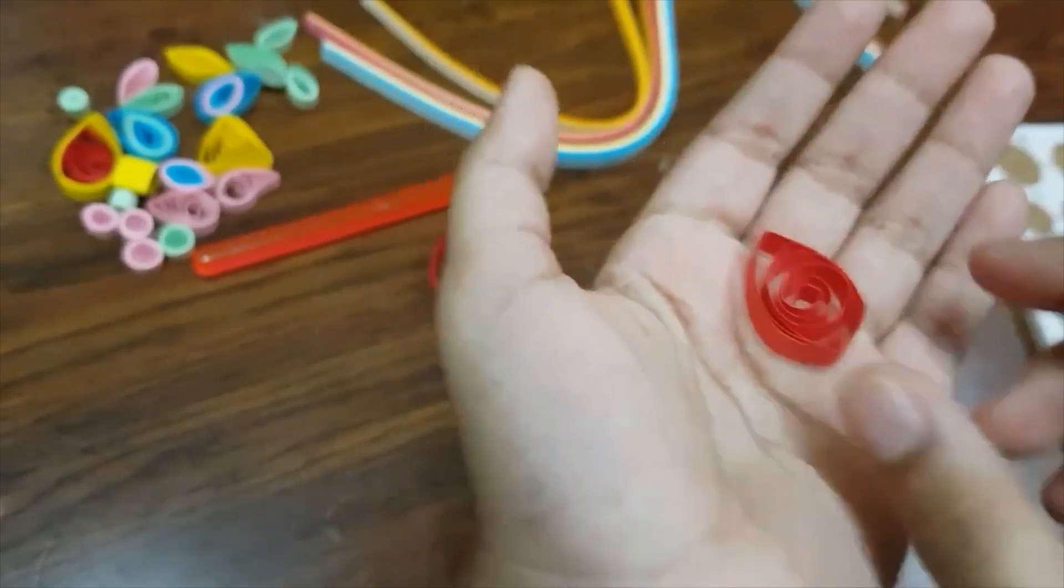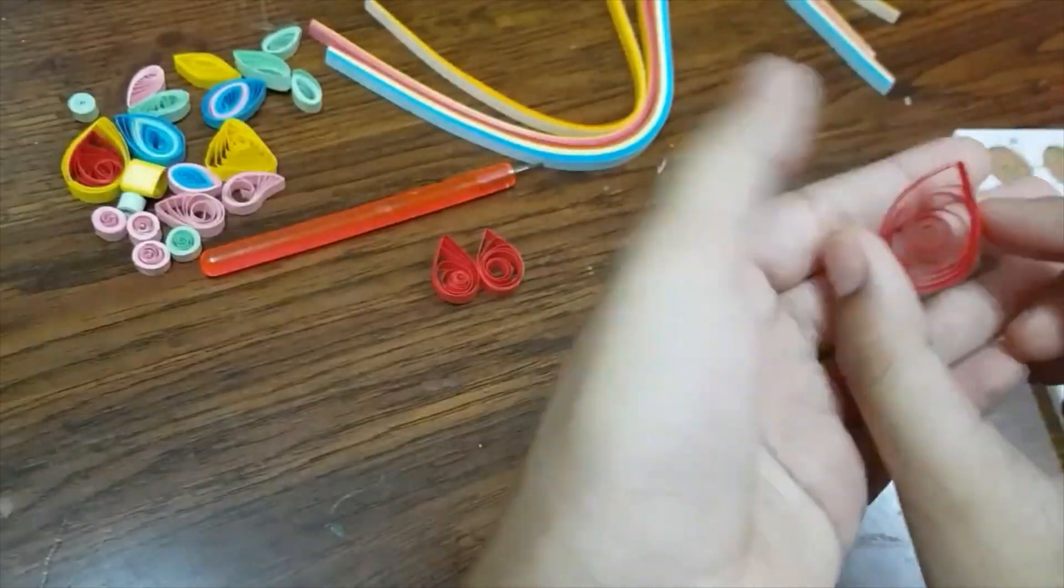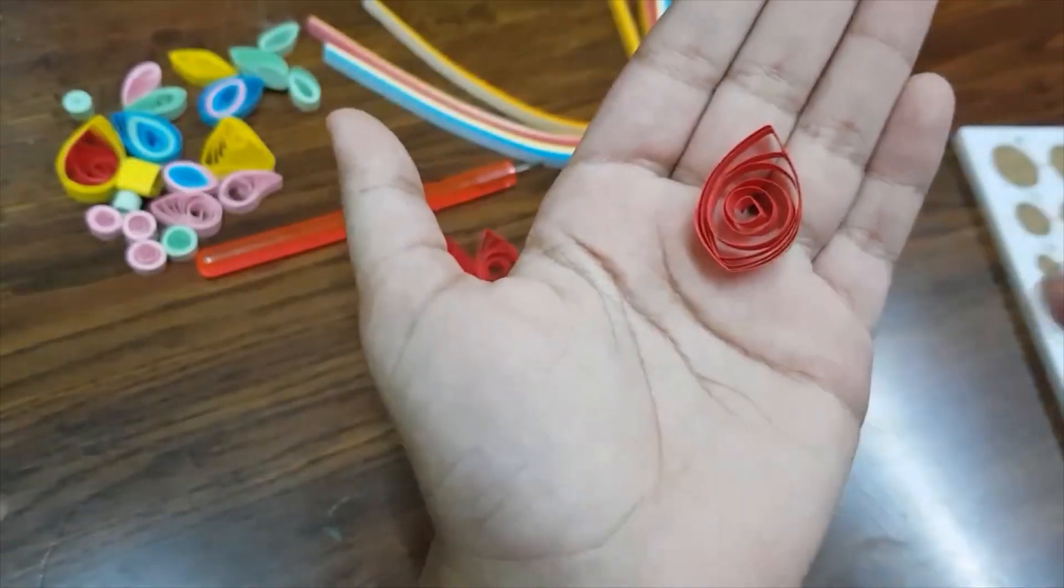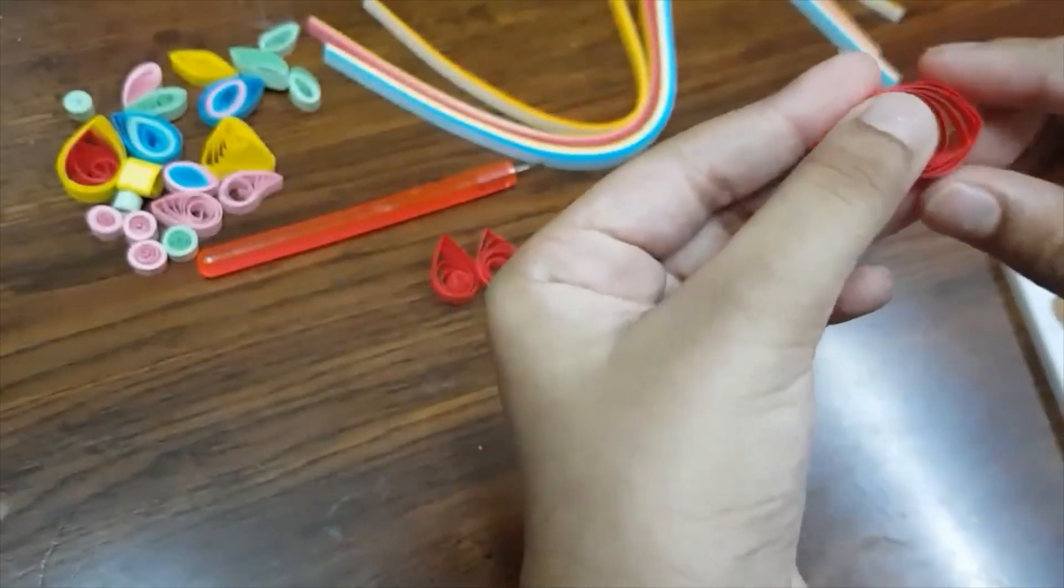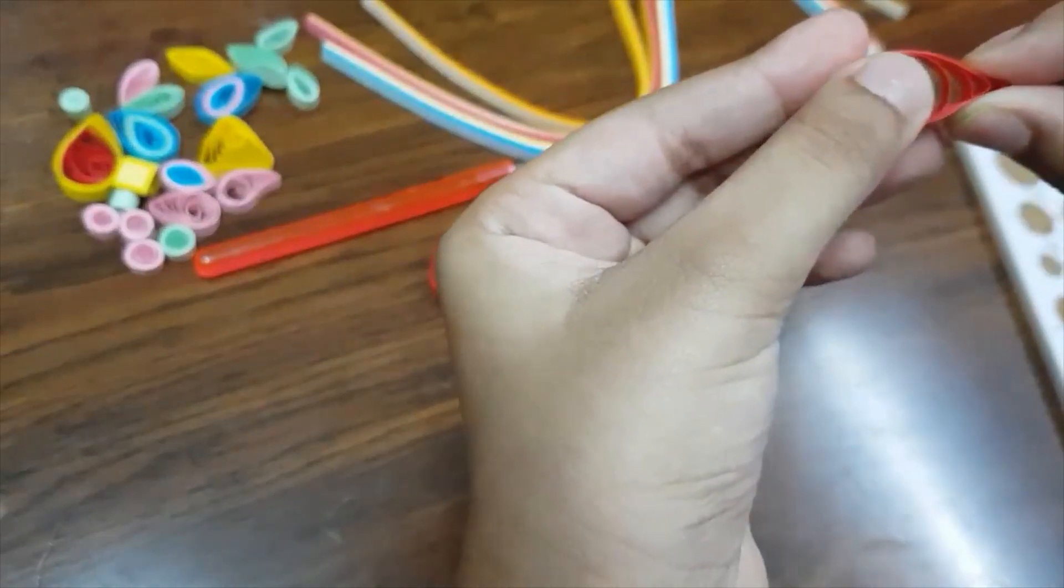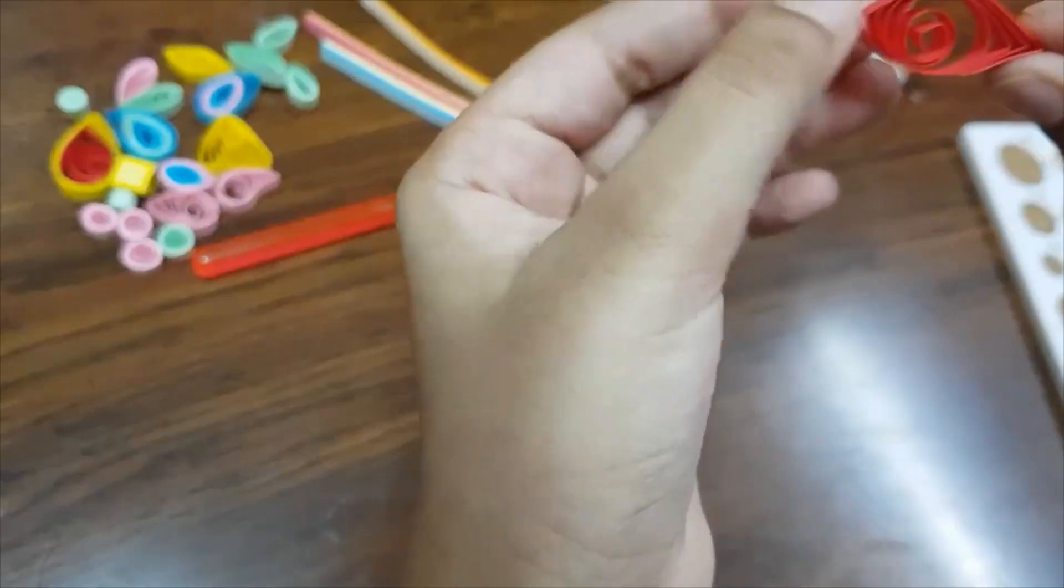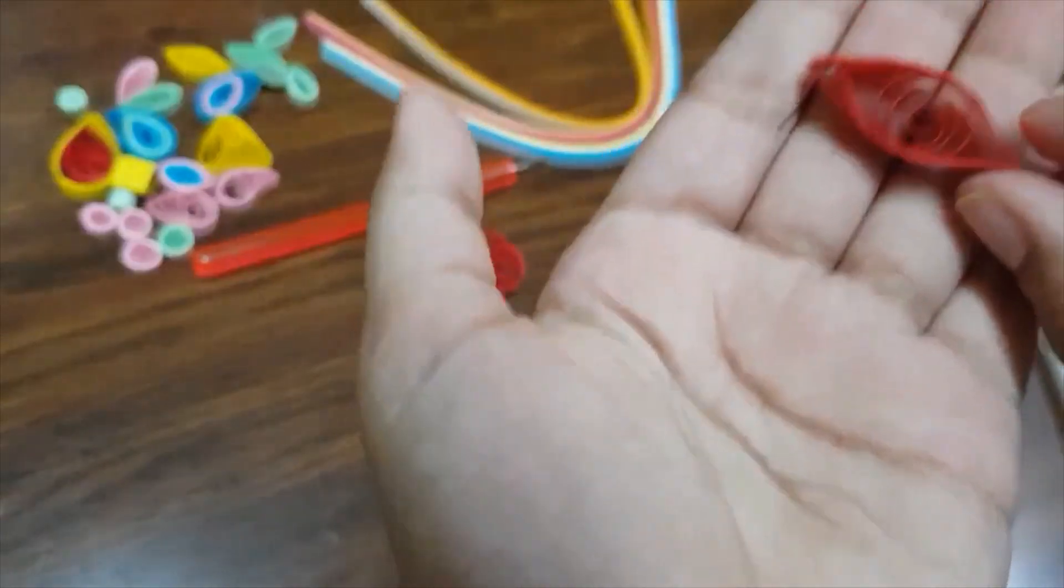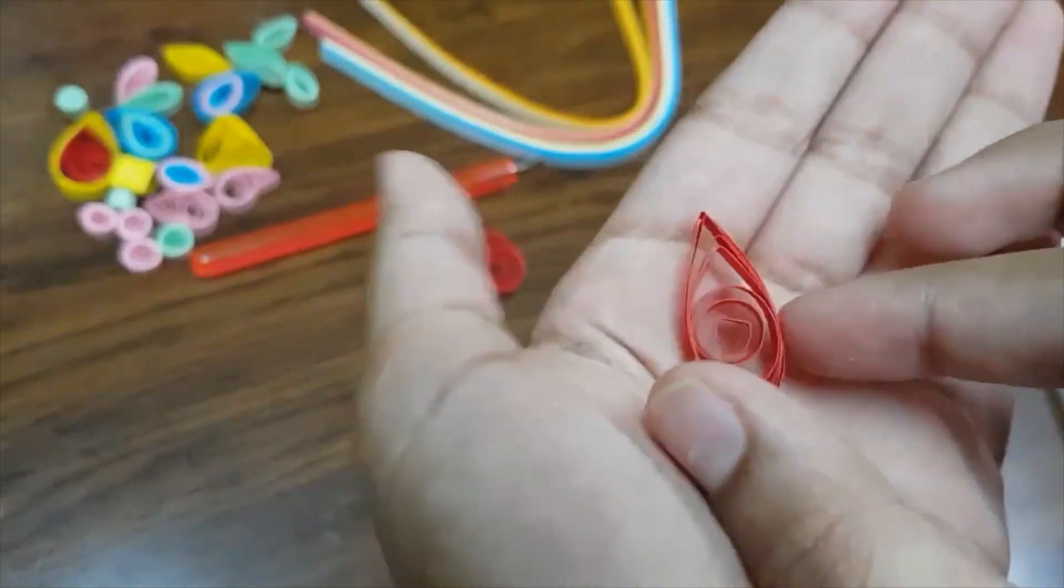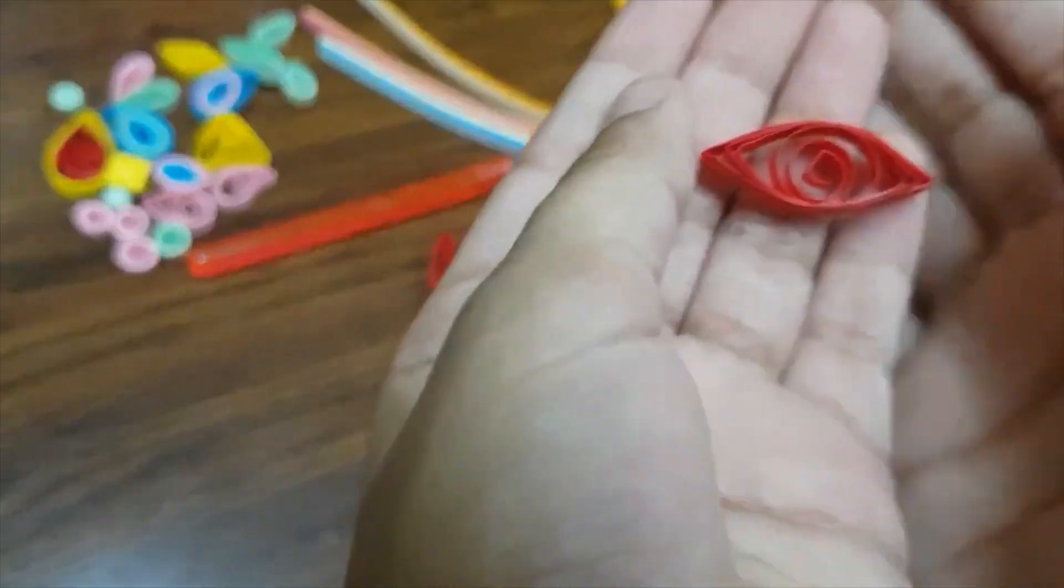So here I have made one more of that. Now I'm going to show you guys how to make a different shape. First of all, you have to make the shape that we made before, and then hold the middle part again and press it on this side. Then you can form more of like an eye shape - you can use it like a petal for a flower too.